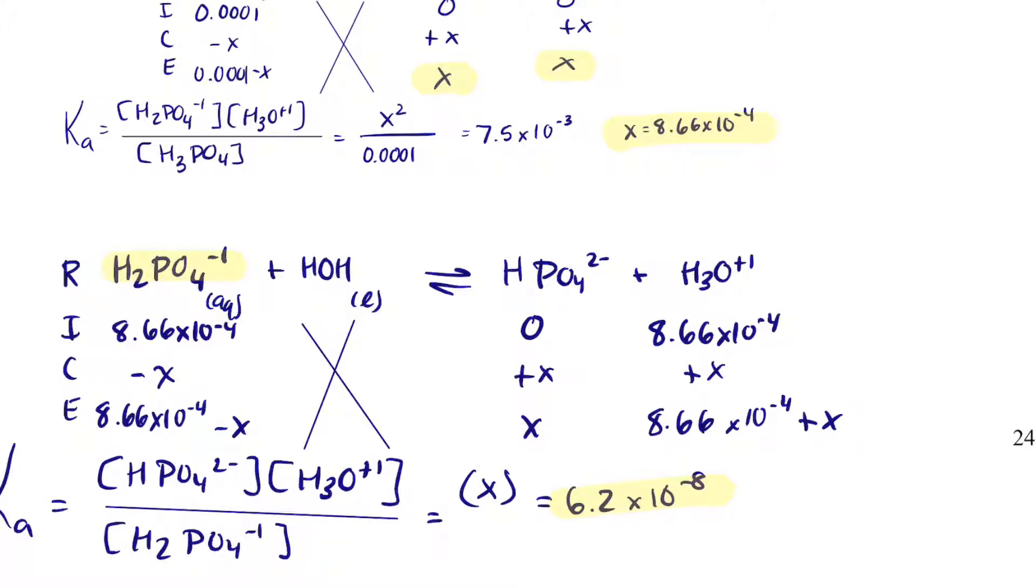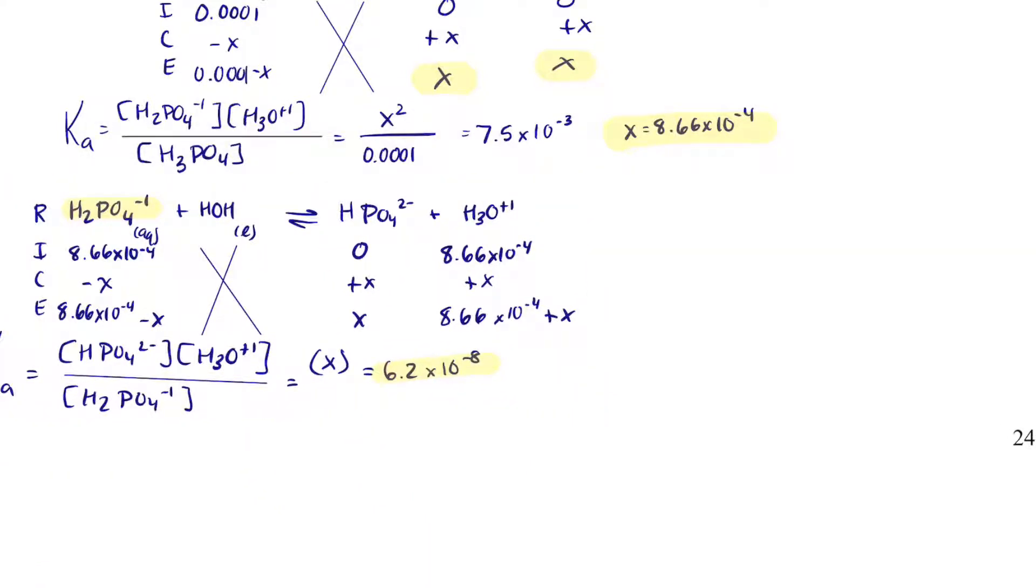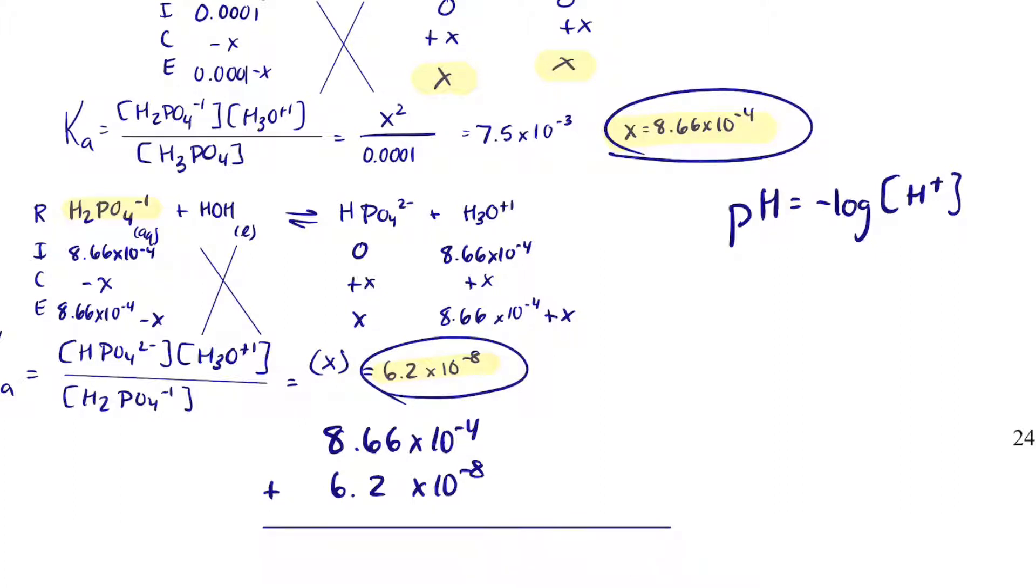But I want to show you something with how these dissociations work. If I were to get the pH right now after only two dissociations, what I would do is I would say pH equals the negative log of H plus or H3O plus. And I have an H plus there, and I have an H plus there. So if I add up 8.66 times 10 to the minus 4 and I add to it 6.2 times 10 to the minus 8, mathematically, unless I want to go out a whole bunch of sig figs, this is still 8.66 times 10 to the minus 4. And so the pH is negative log 8.66 times 10 to the minus 4, which I can estimate it's going to be a little bit less than 4. And my calculator tells me that the pH is 3.06, and I've solved the question.